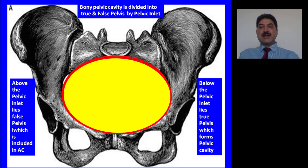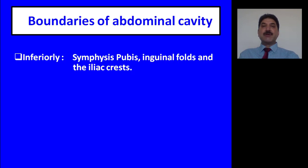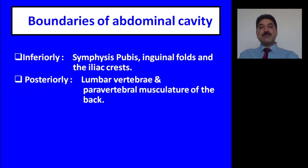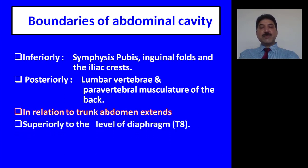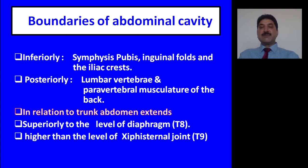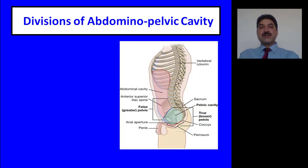Below the pelvic inlet lies the true pelvis. Boundaries of abdominal pelvic cavity on the surface: inferiorly there is the symphysis pubis, inguinal folds and iliac crests. Posteriorly it is bounded by the lumbar vertebrae and paravertebral muscular chain of the back. In relation to the trunk, the abdomen extends superiorly to the level of the diaphragm, i.e. T8, which is higher than the level of the xiphisternal joint, i.e. T9.